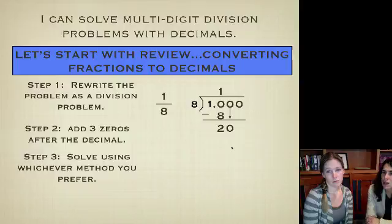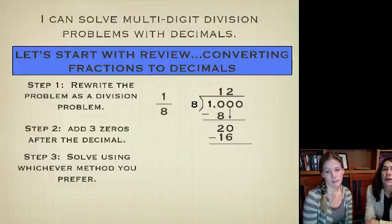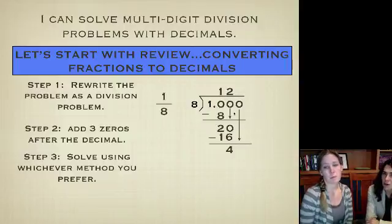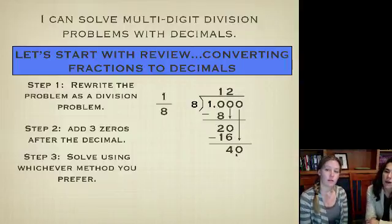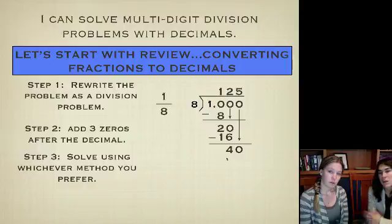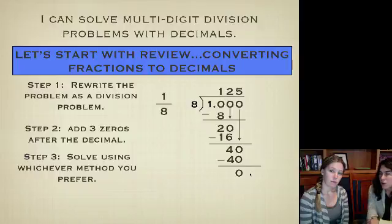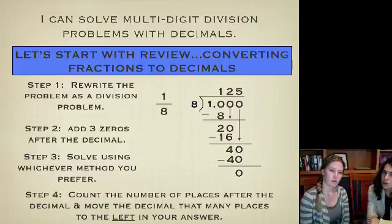So eight can go into 20 two times, and now we're going to multiply again. Two times eight equals 16. Subtract again, and we get four, and then once again, we're going to bring down the second zero here, and now we have 40. So now we're going to think to ourselves eight can go into 40 five times. Five times eight, once again, is 40. We're going to subtract that, and we get zero.